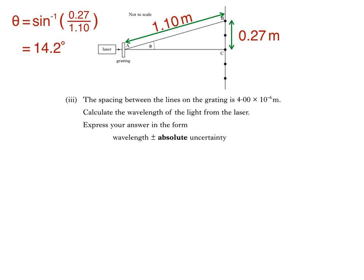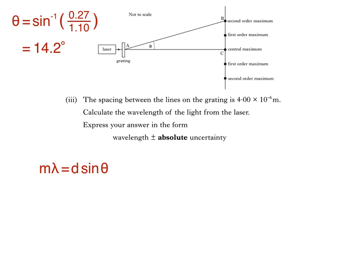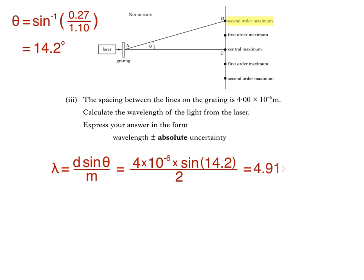We now have all the information we need to calculate wavelength using the grating equation, rearranged to make wavelength lambda the subject. D is the spacing between the lines on the grating, theta is the angle between the central maximum and the maximum being observed, and M is the order of the maximum — in this case M is 2, since it's a second order maximum. Substituting these values into the equation gives us 4.91 × 10⁻⁷ metres.